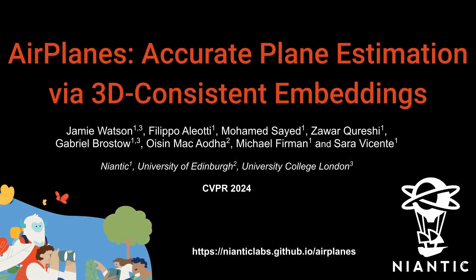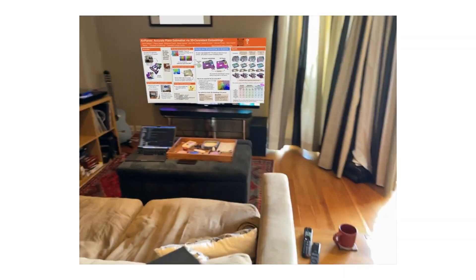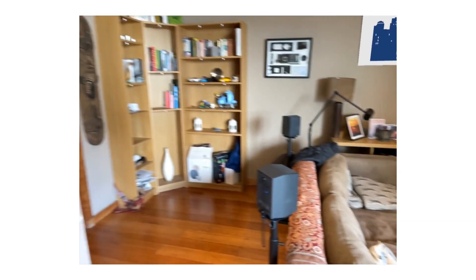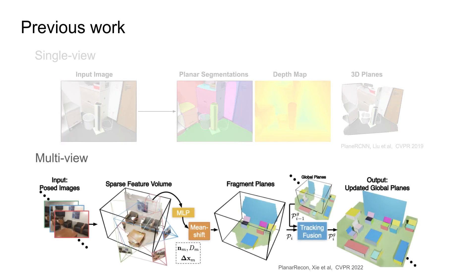We introduce Airplanes, accurate plane estimation via 3D consistent embeddings — a new approach for fast and efficient 3D plane estimation from posed images in indoor scenes. Decomposing a 3D scene into planes is a useful representation for downstream applications such as robotics and augmented reality. Previous work for 3D plane detection focuses on detecting planes from single images, or uses a complex end-to-end pipeline that jointly estimates geometry and plane assignment from multi-view images.